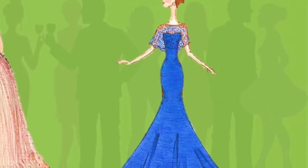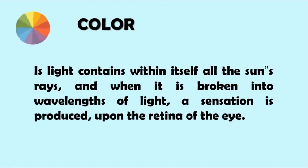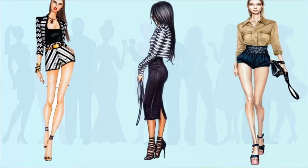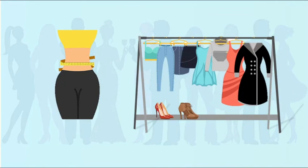The last element is color. Color is light — it contains within itself all the sun's rays, and when broken into wavelengths of light, a sensation is produced upon the retina of the eye. Black, dark tones, or deeply grayed colors tend to make the figure appear smaller or slimmer than bright or light colors. A plain color makes the figure look slimmer than a combination of contrasting colors. If you have a very small figure, try to avoid wearing overly large designs in prints, plaids, or stripes, and contrast and accents should be done with care.